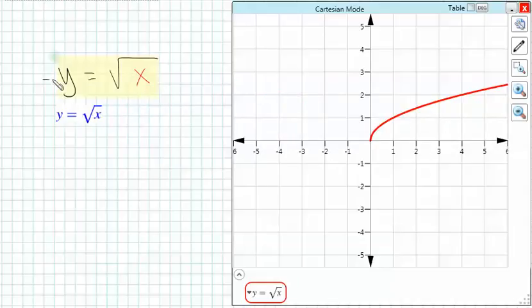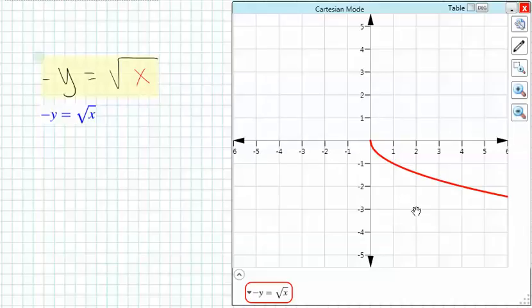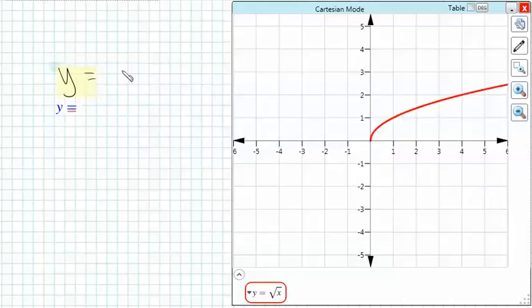and if we negate the y, it causes a reflection over the x-axis. This property is true for all functions.